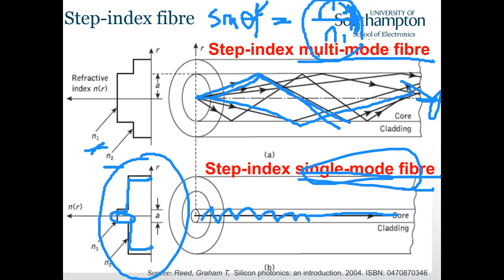Another reason to keep n1 and n2 close: if we make them very different we need more doping, which causes higher scattering and higher attenuation. So for single-mode fiber n1 and n2 should be quite close, reducing attenuation.